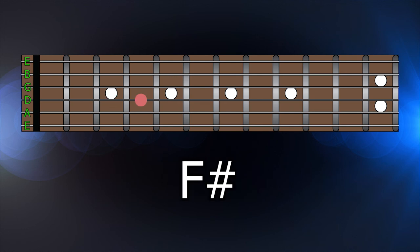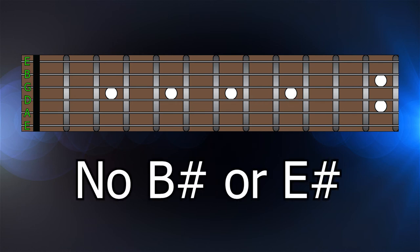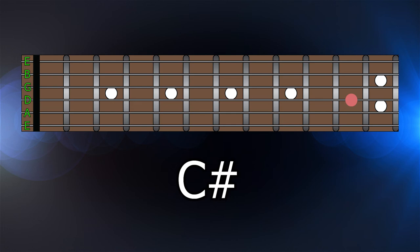From there we have F sharp, G, G sharp, A, A sharp, B. Remember, there's also no B sharp, so we go straight to C, C sharp, and back to D.